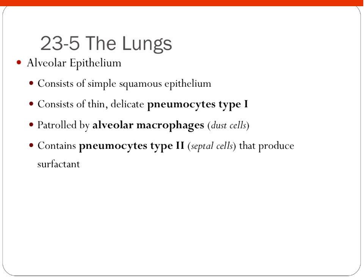The epithelium of your lungs is simple squamous epithelium — you will probably have a question on your exam asking you to describe the type of cells that make up your lungs. You have three special types of cells: pneumatocytes type 1 are very thin, delicate simple epithelial cells found there. You also have dust cells that are part of the immune response, patrolling for any pathogens to engulf. And then you have pneumatocytes type 2 cells, whose job is to produce surfactant.